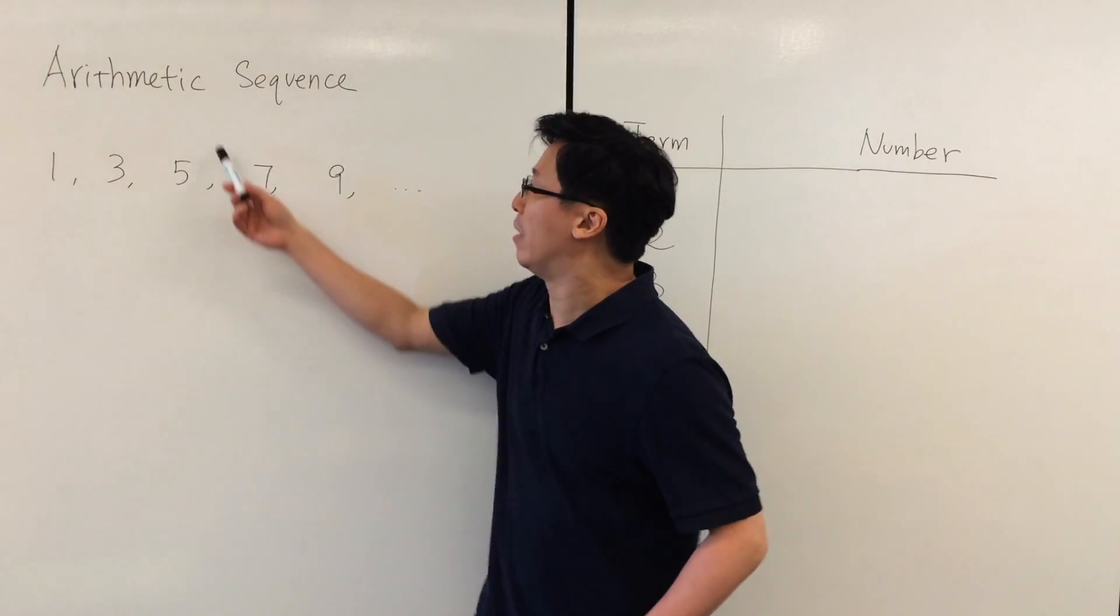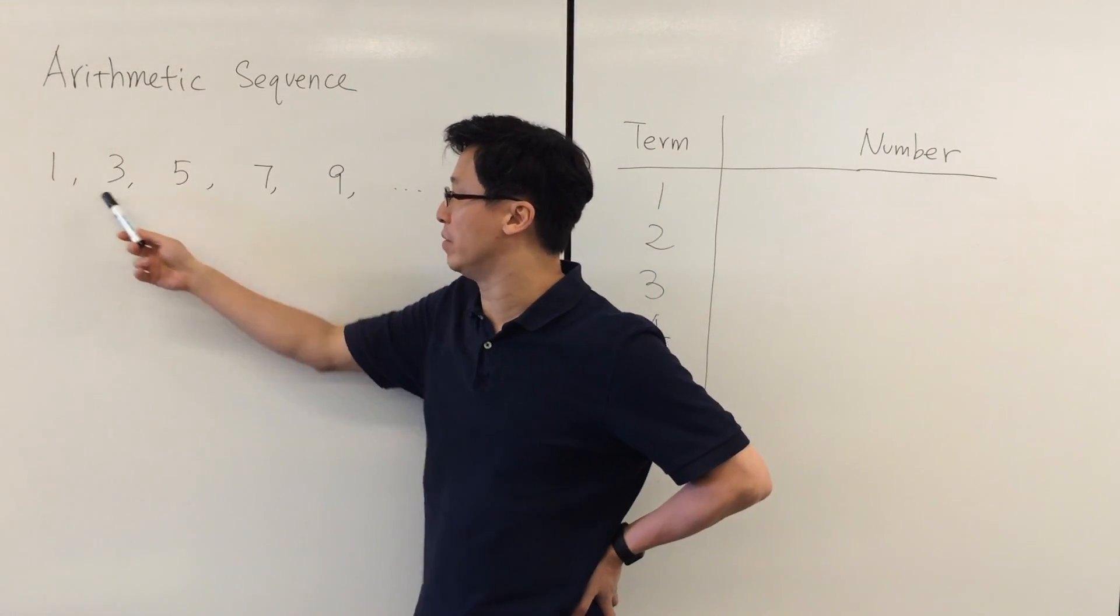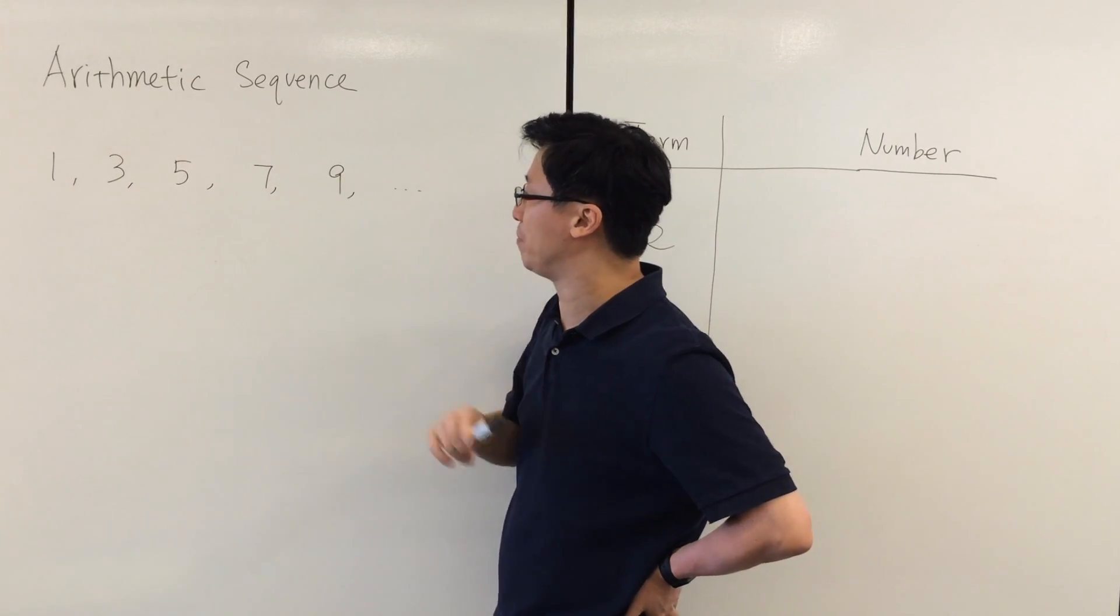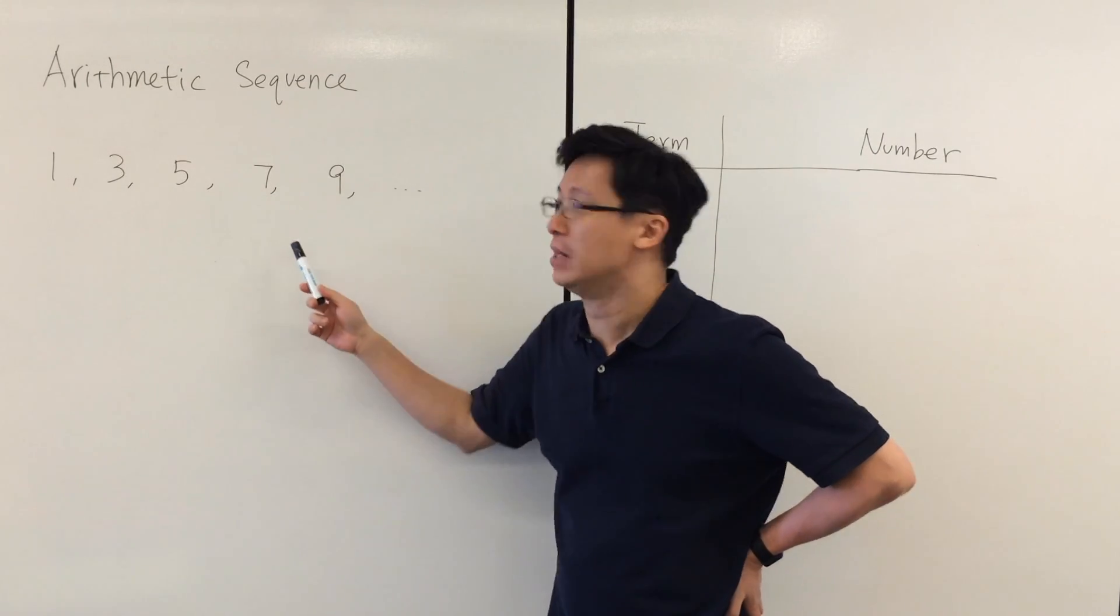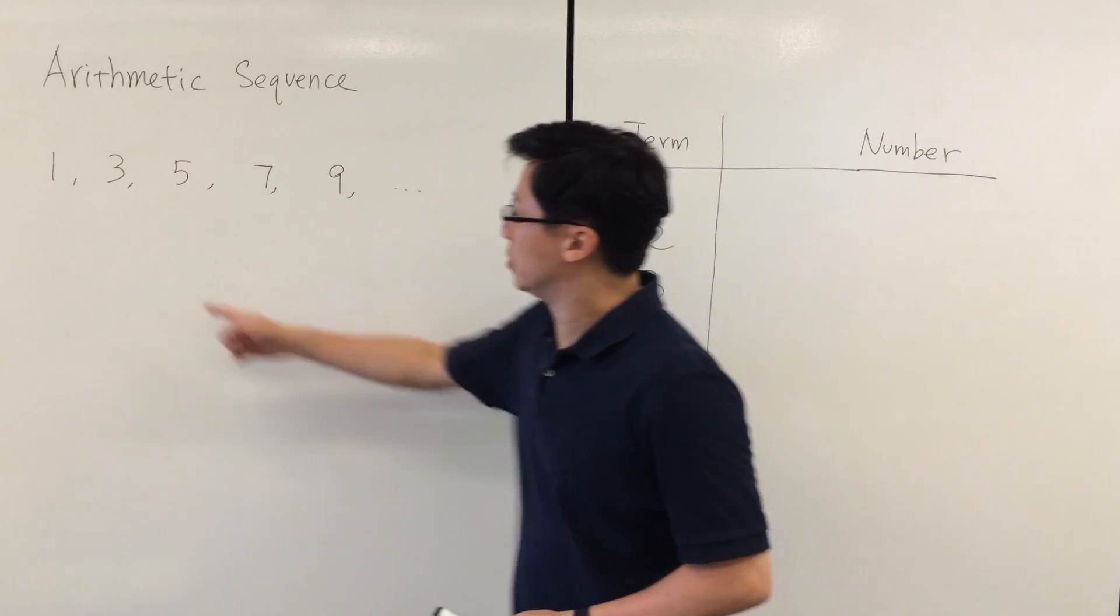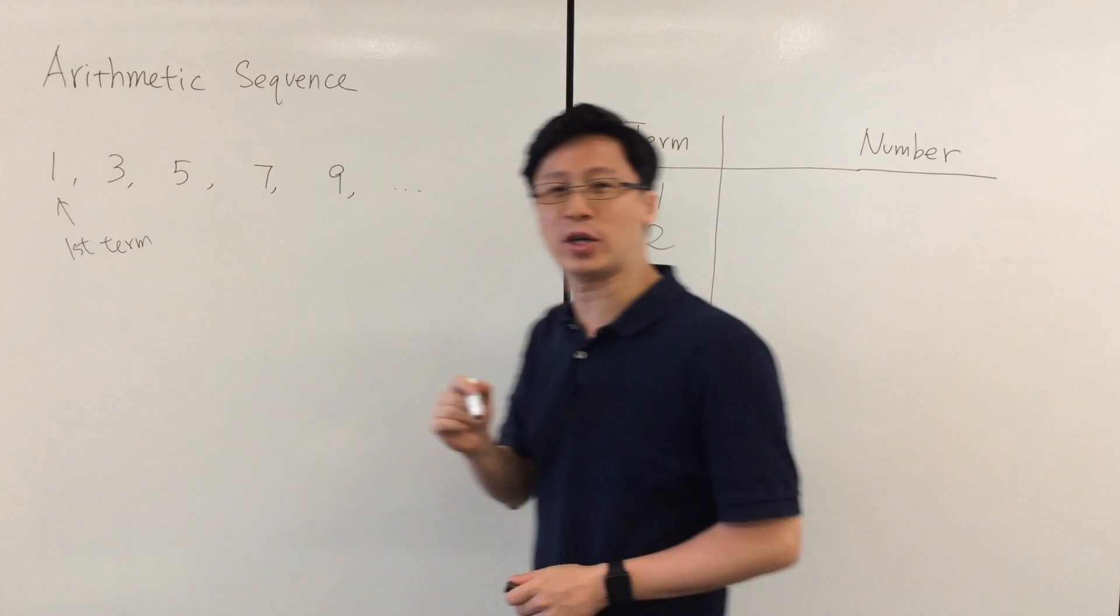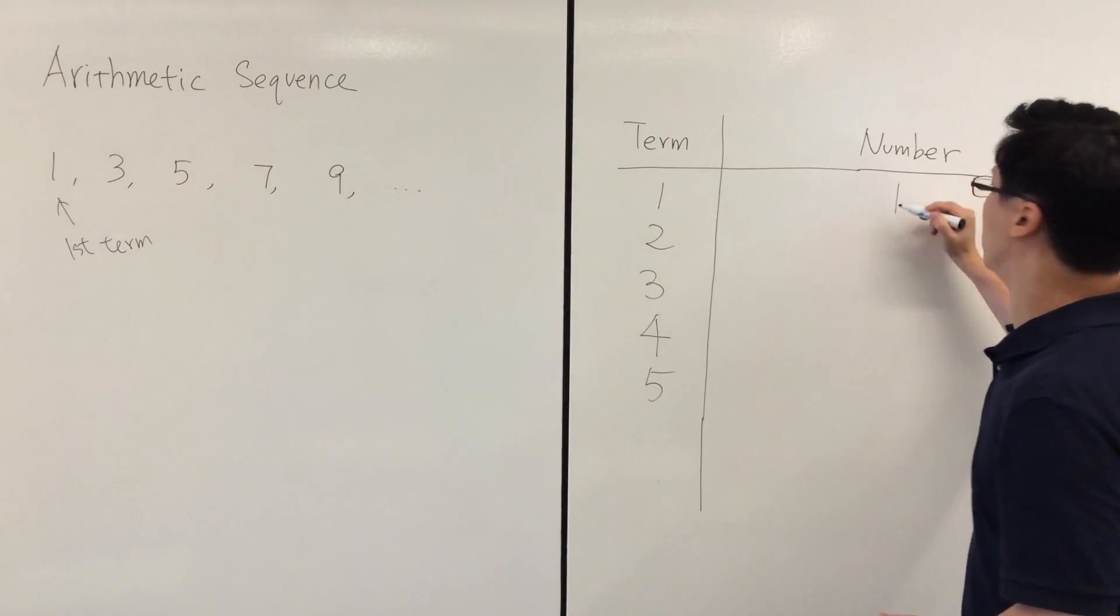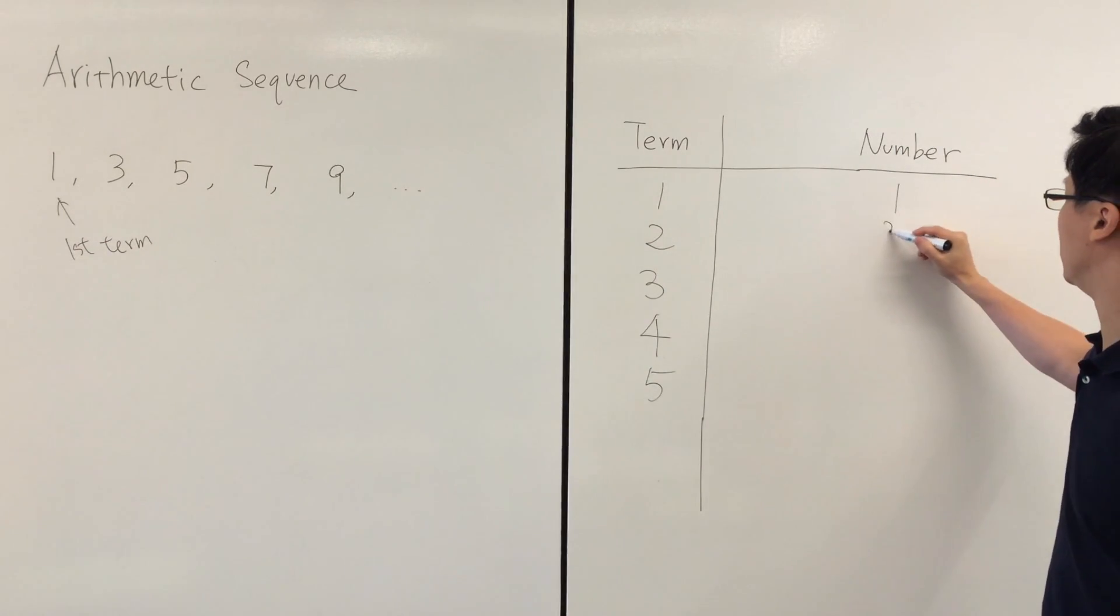And now let's look at another arithmetic sequence: 1, 3, 5, 7, 9. It is quite obvious that these are the odd numbers. So this is the first term is 1, second term is 3.